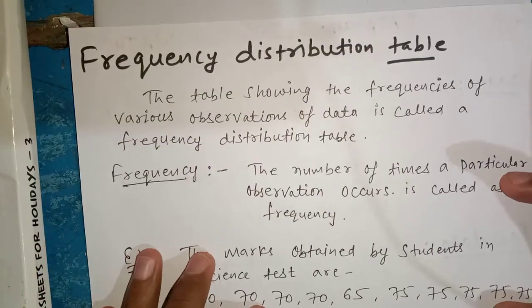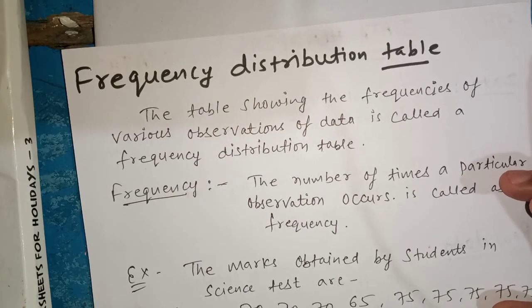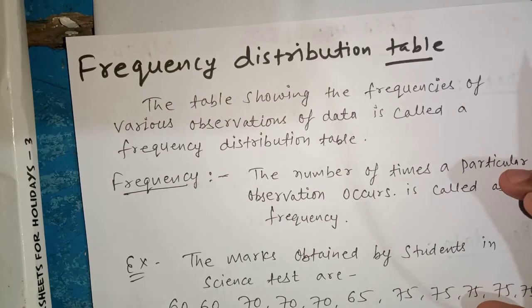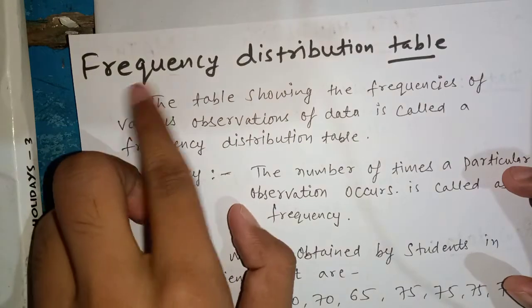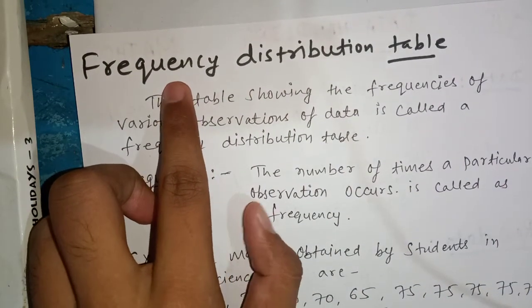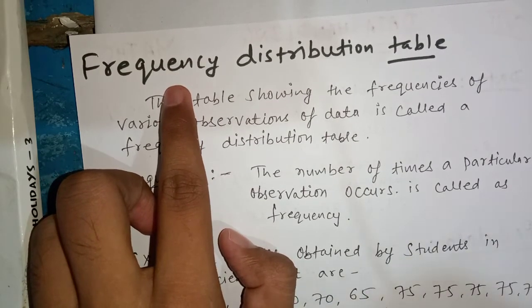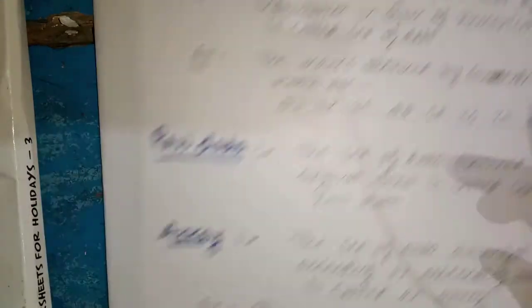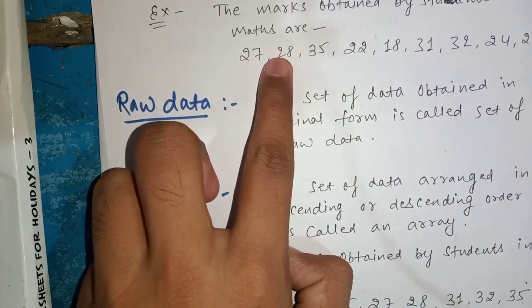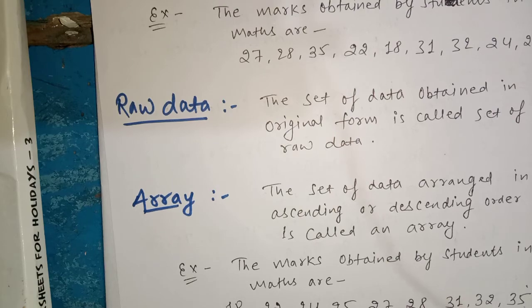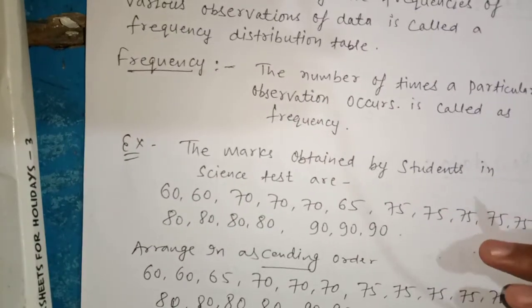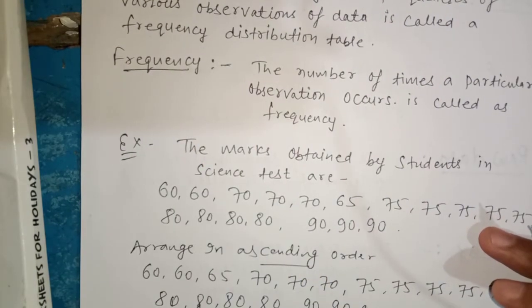Now we'll start with the next term: frequency distribution table. What is a frequency distribution table? It has two parts — frequency and distribution table. Distribution means to arrange or to distribute. But what is frequency? Frequency means in any particular observation, how many times have we seen that particular observation. Each numerical figure present in the data is called an observation. The number of times a particular observation occurs is called its frequency.